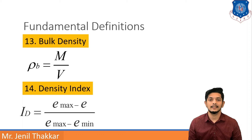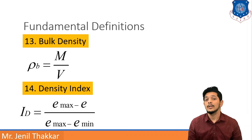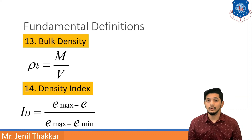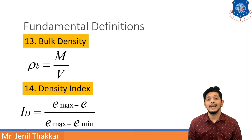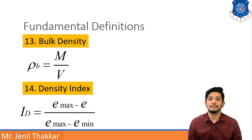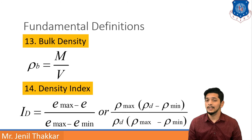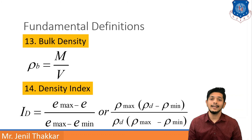The next definition is Density Index, denoted by ID. ID equals (E max minus E) upon (E max minus E minimum). Here, E is the void ratio of the soil in its natural state. E max is the void ratio in the loosest form of soil (most voids), and E minimum is the void ratio in the densest form. Similarly, ID can also be written as [rho D max (rho D minus rho min)] upon [rho D (rho D max minus rho min)].